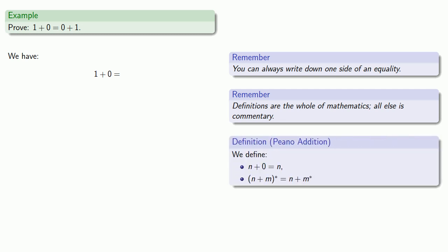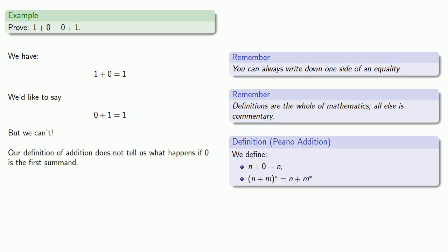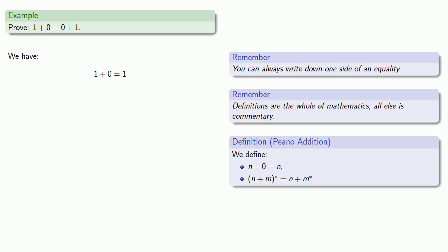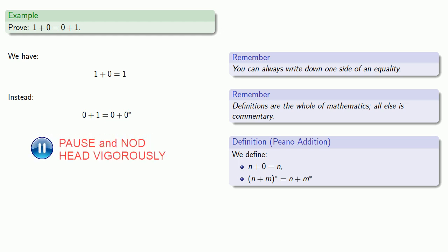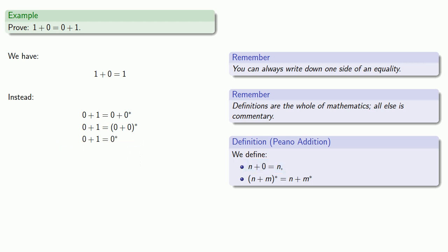Based on our definition, we know what one plus zero is equal to. We'd like to say that zero plus one is equal to one, but we can't — our definition of addition doesn't tell us what happens if zero is the first summand. We can't just use commutativity of addition because we don't yet have it. So instead we proceed differently: zero plus one is the same as zero plus the successor of zero, or the successor of zero plus zero. We do know what happens when we add zero, so that's the successor of zero, or one.